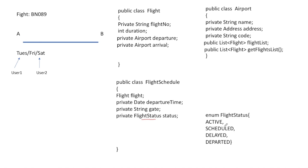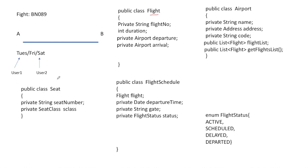One flight can have multiple flight schedules, and every flight schedule contains the object of class Flight, which gives flight number, duration, and departure and arrival airport objects. FlightStatus is an enum: active, scheduled, delayed, or any other status depending on requirements. Flight, Airport, and FlightSchedule are now finalized, and the user always books the flight schedule — so one flight can have three different instances of FlightSchedule.